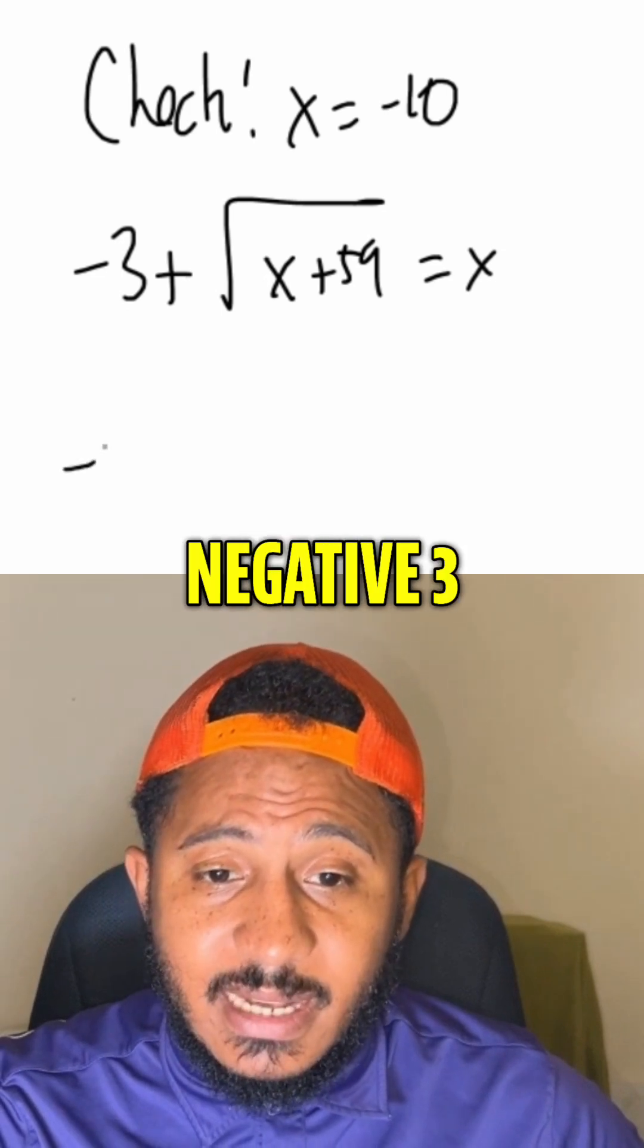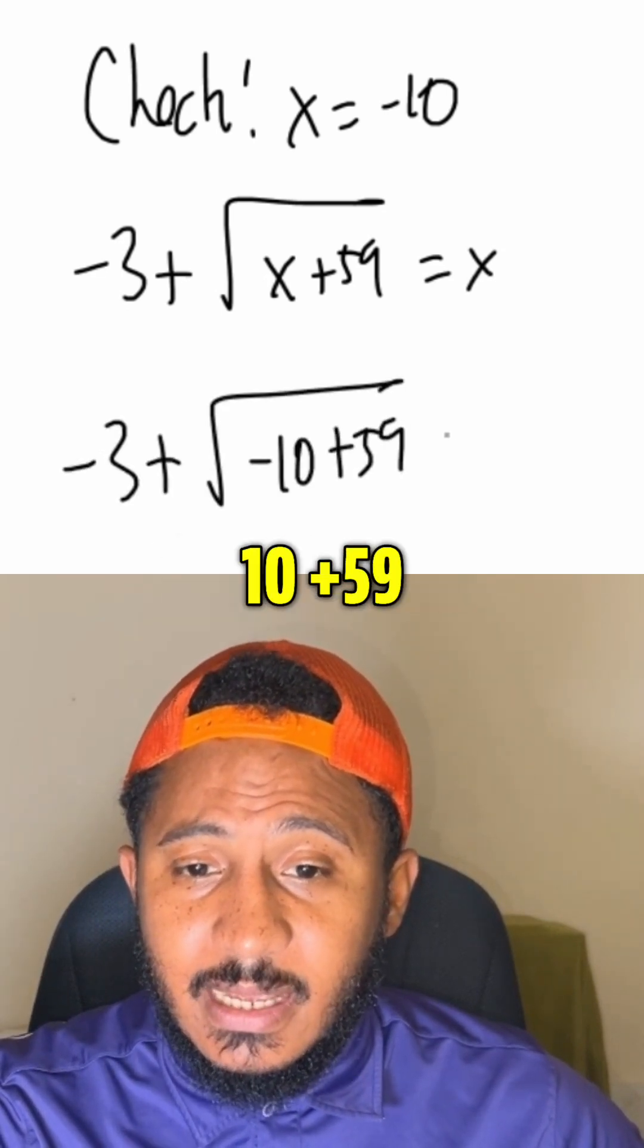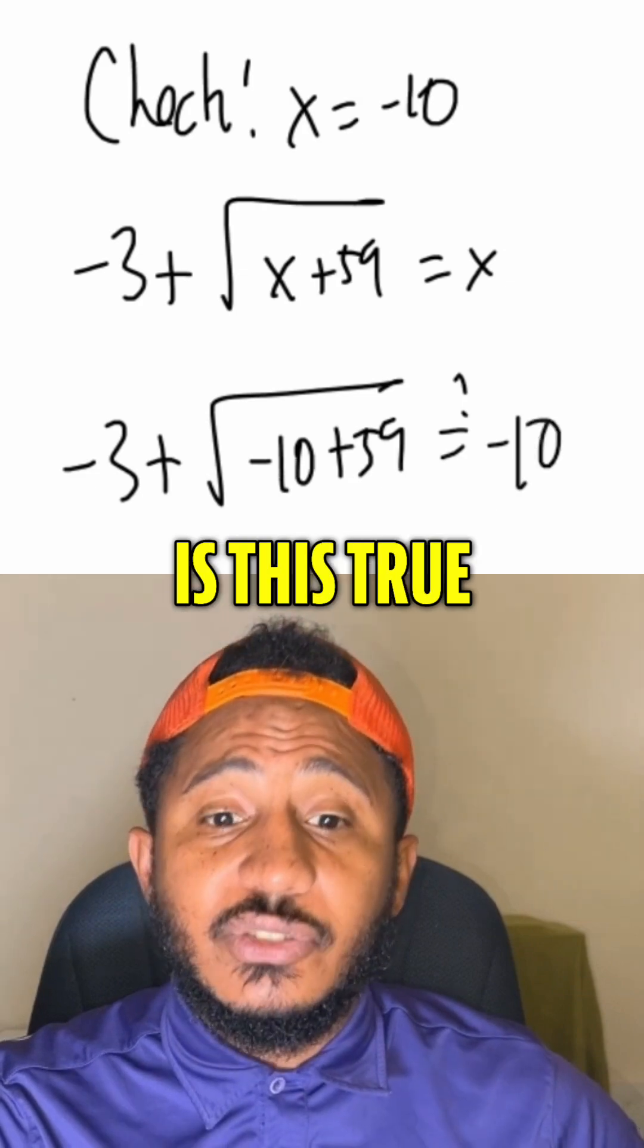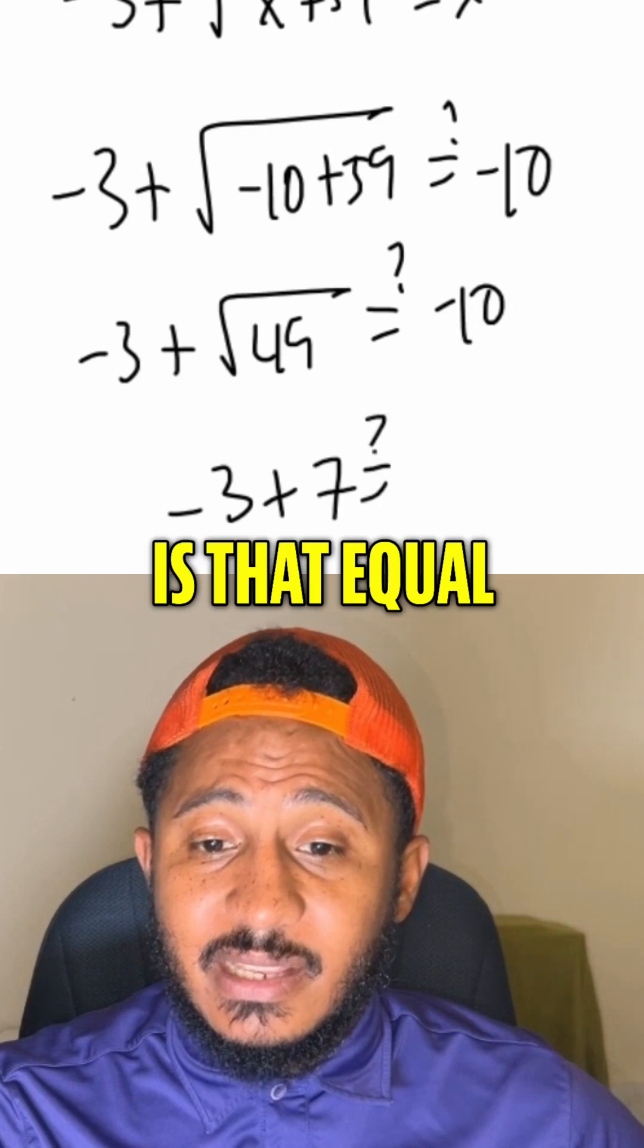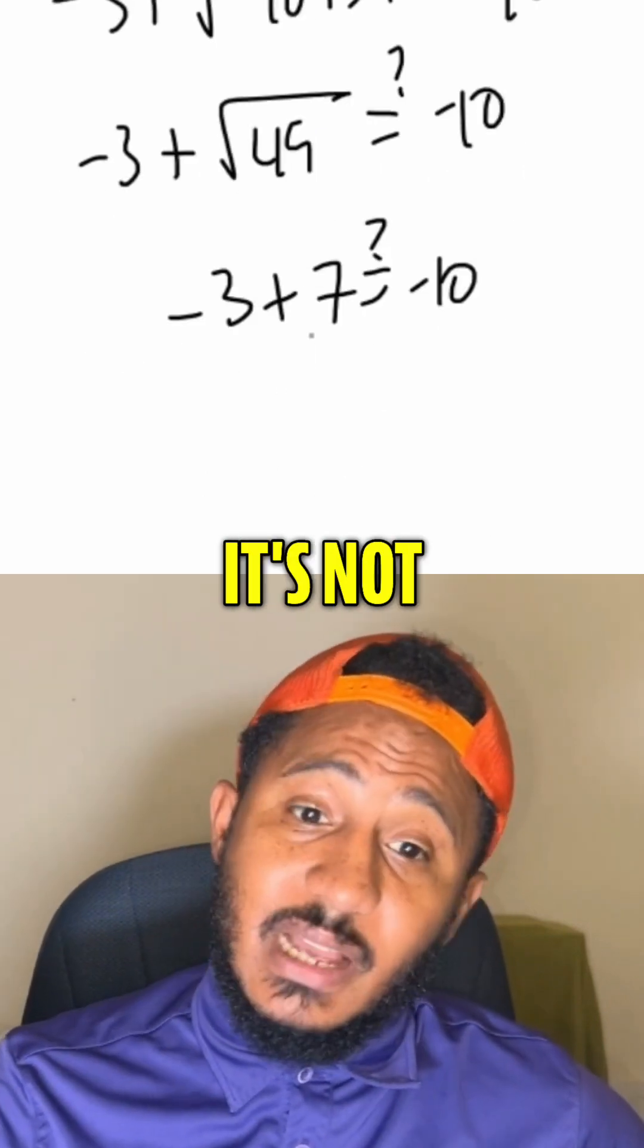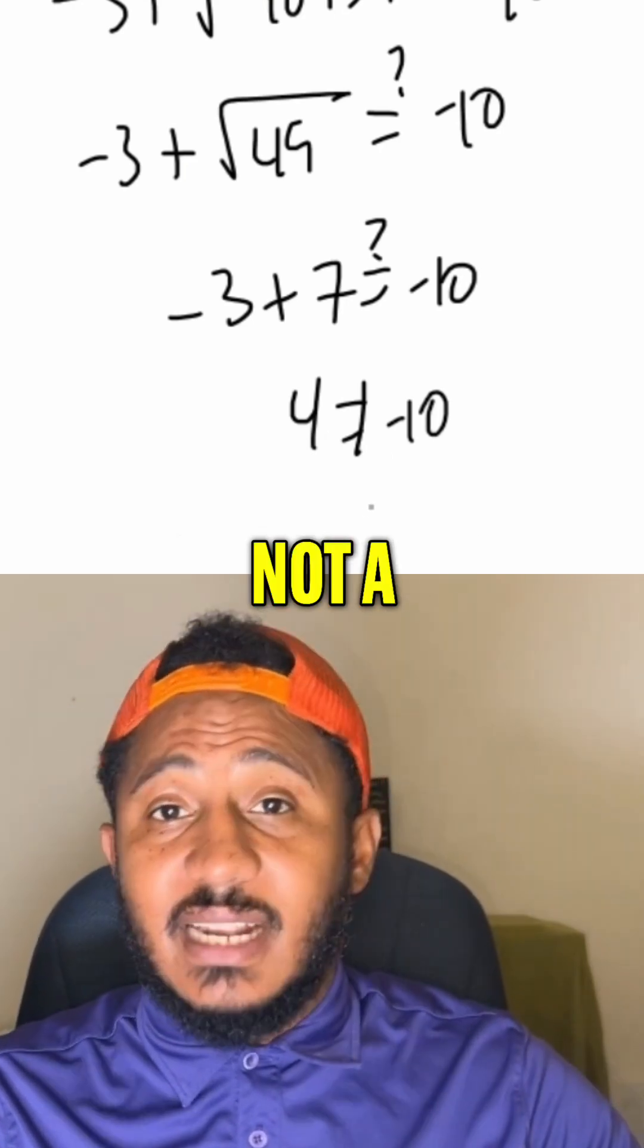So plug in negative 10, we get negative 3 plus the square root of negative 10 plus 59, is that equal to negative 10? Is this true? Well, the square root of 49 is 7, so negative 3 plus 7, is that equal to negative 10? No, it's not, because negative 3 plus 7 is 4, which is not equal to negative 10. So negative 10 is not a solution.